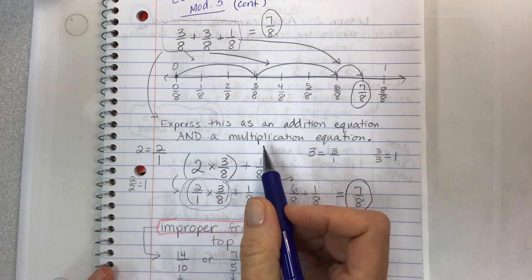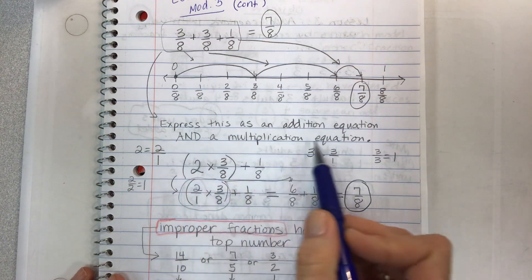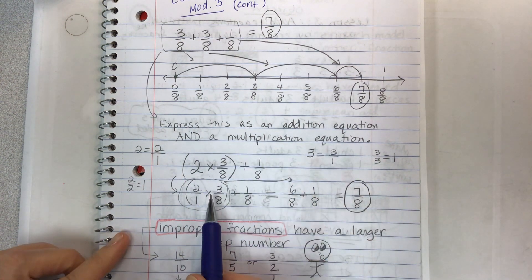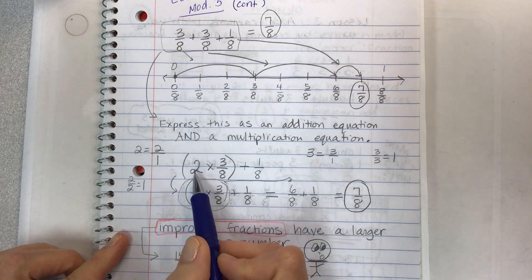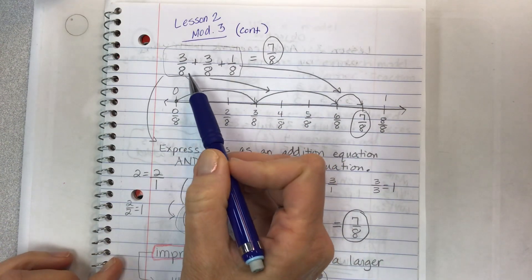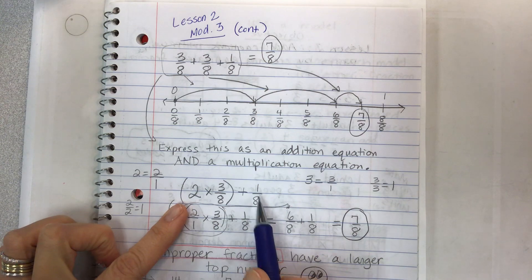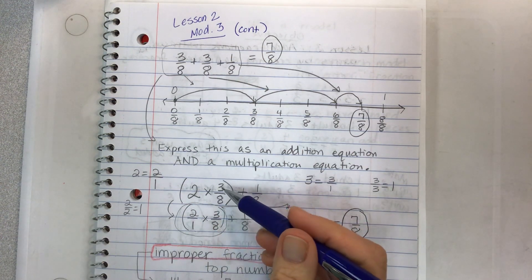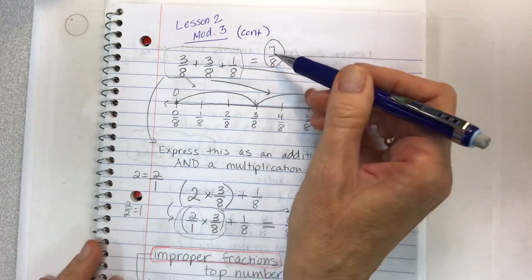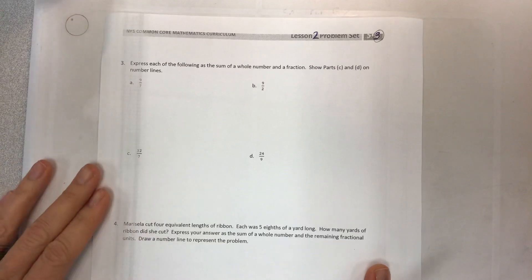Express this as an addition equation and a multiplication equation — that's what we're doing today. So if I have two times three eighths, then I would have three eighths twice, plus the one eighth on the side. Three plus three is six, plus one is seven — that's how you get the seven eighths. See the previous video to get all those notes.